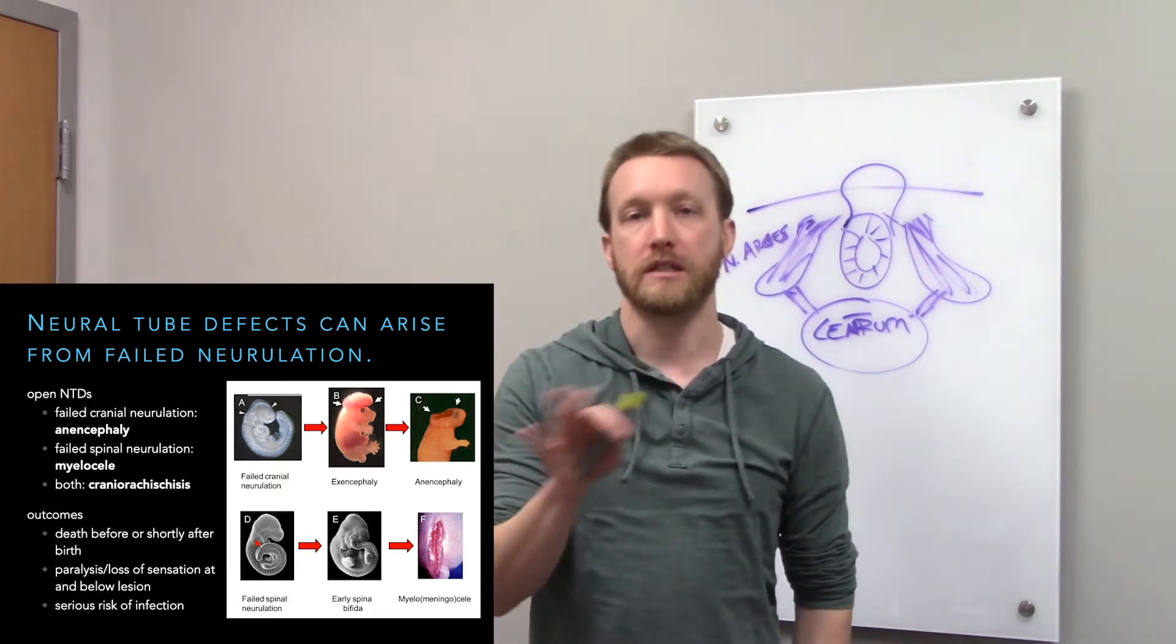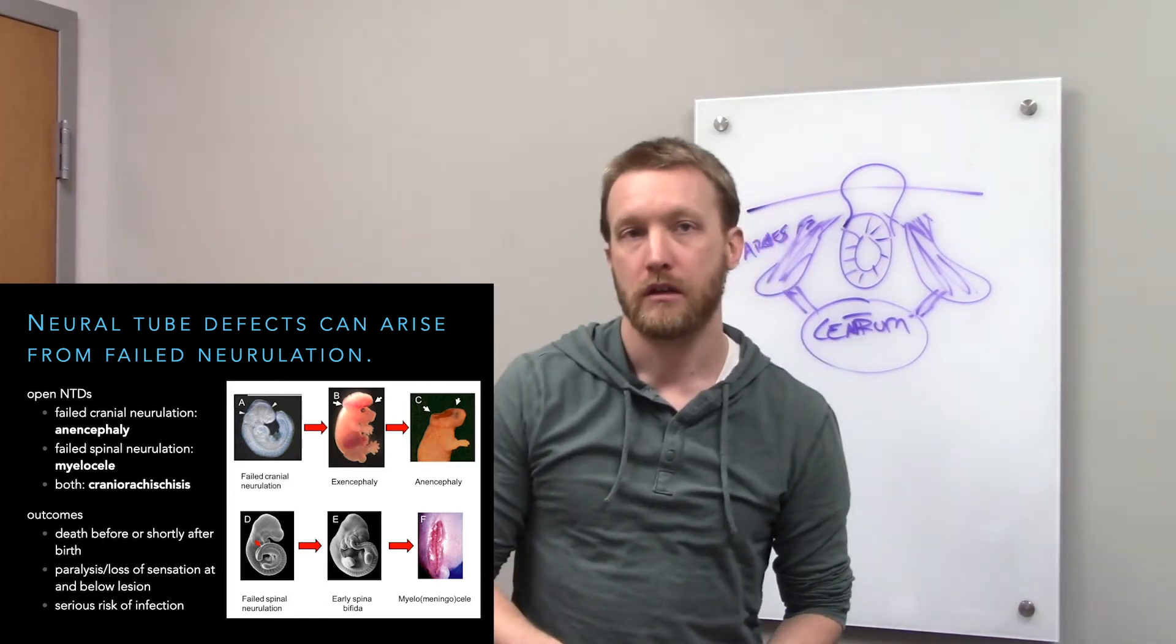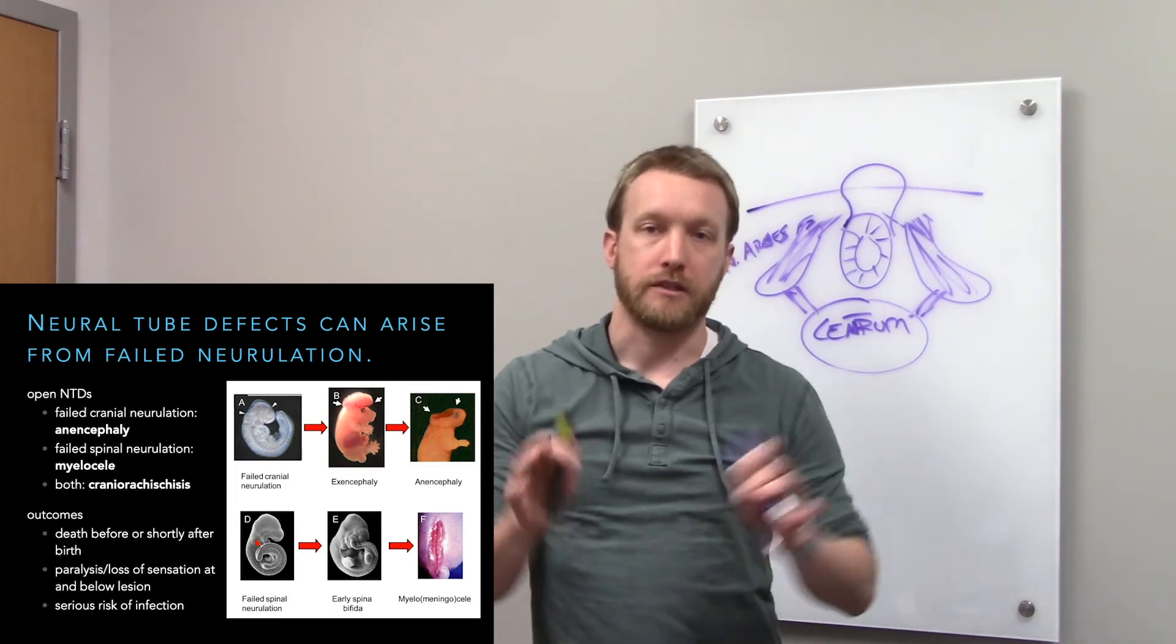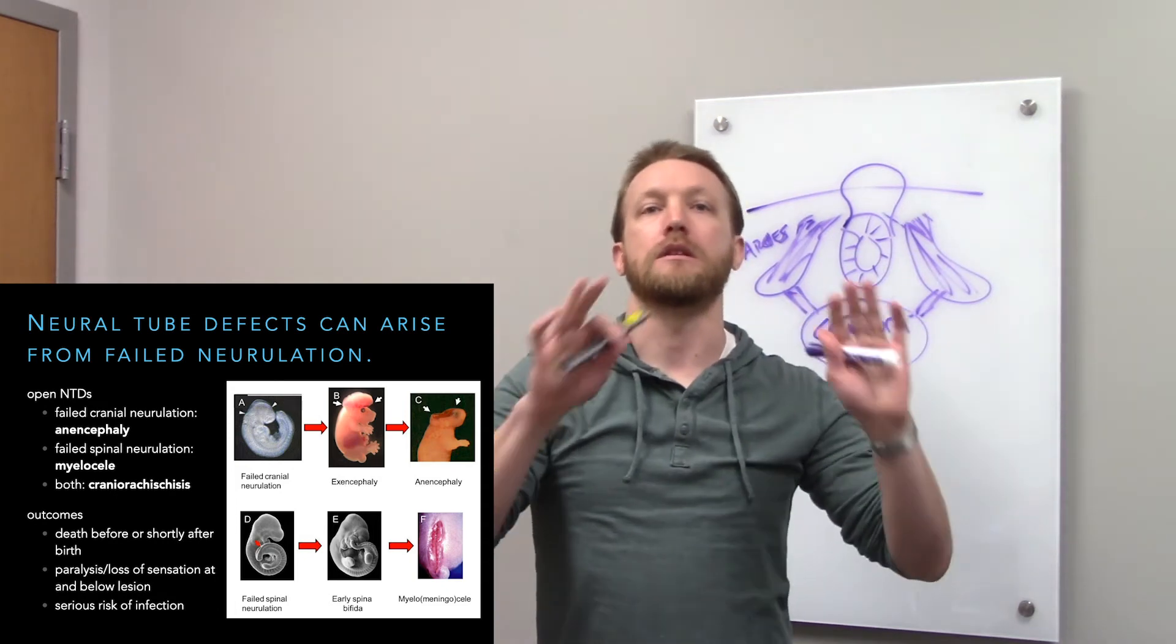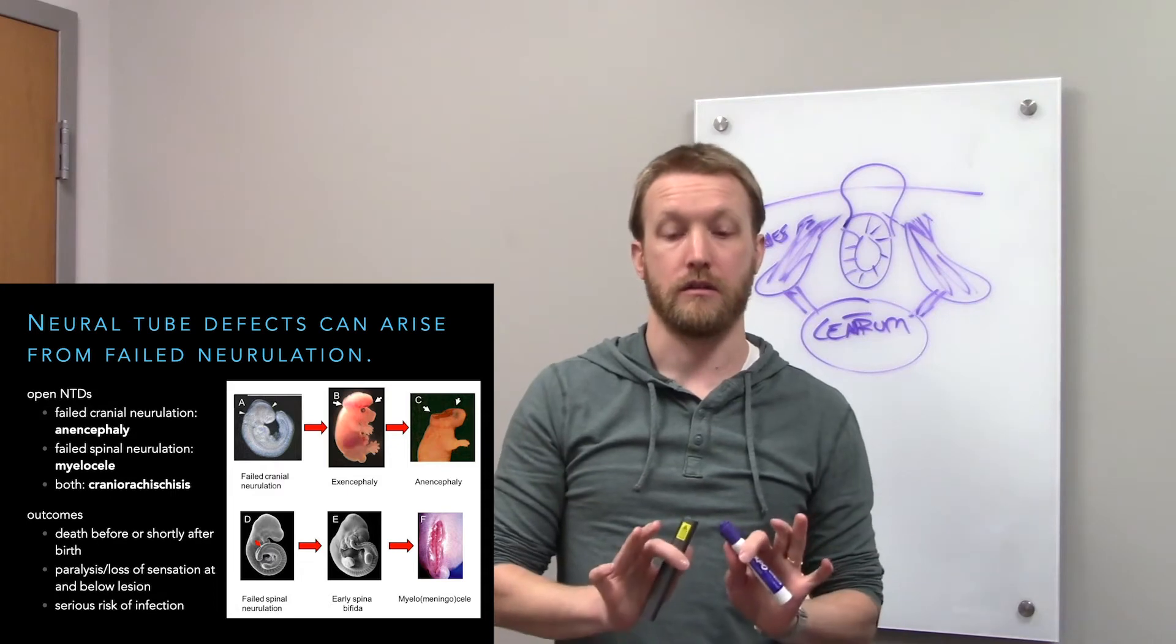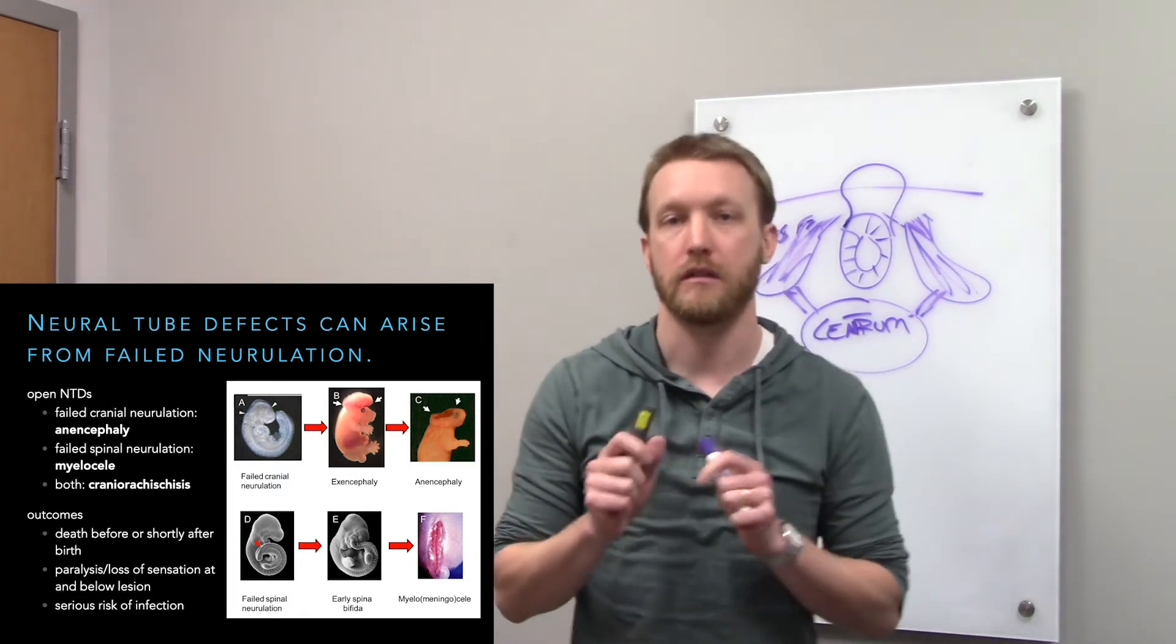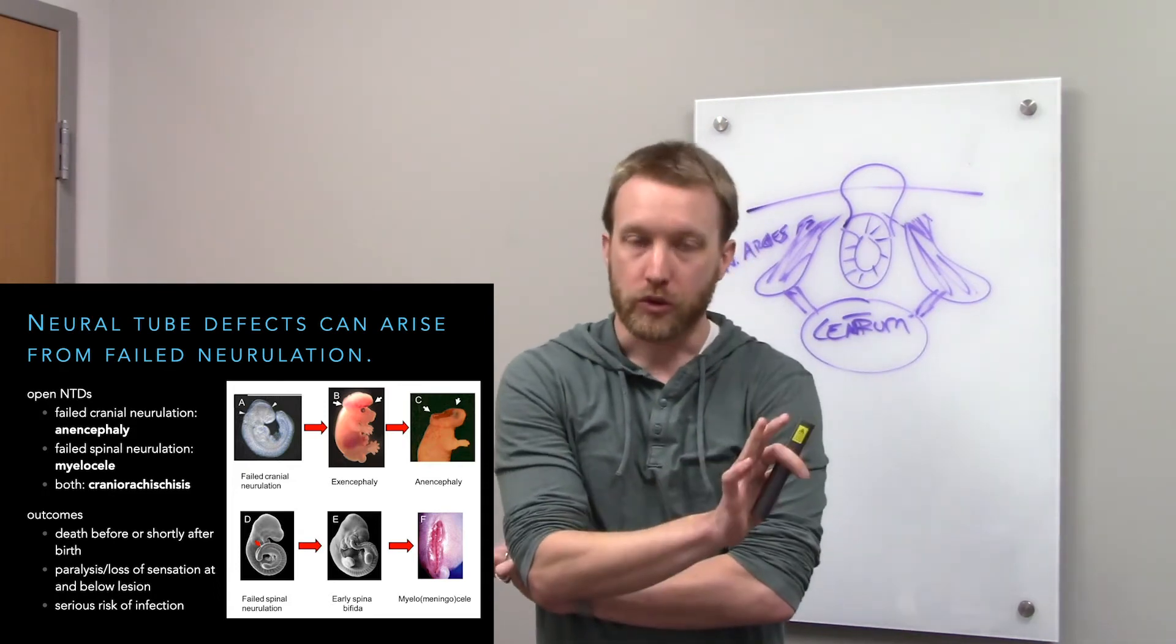On occasion, both things can happen together, both the top and the bottom. When those happen together, it's called craniorachischisis. The outcomes depend. Cranial issues almost invariably lead to death before or shortly after birth. These are not survivable in most cases, and that's why we're not going to talk about them. You probably won't see anyone with a cranial neural tube defect. They are rare.